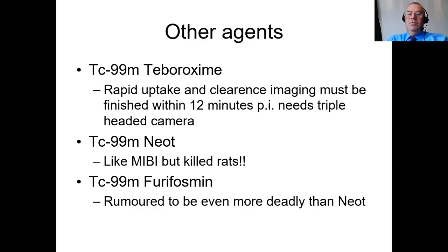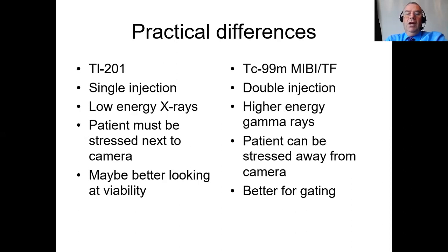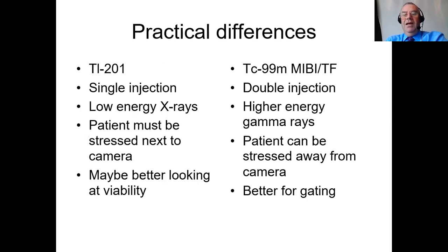Tetrofosmin has a very similar radiation dose and preparation doesn't require boiling, which used to help radiopharmacies. Other agents have been suggested but none have really been used - some were quite toxic, and terbosoxime washed out so fast that you needed a triple-headed gamma camera, which doesn't really exist today. In practical differences: thallium has a single injection with low energy X-rays but the patient must be stressed next to the camera and is probably better for viability. MIBI and tetrofosmin require two injections, higher energy gamma rays better for larger patients, the patient can be stressed away from the camera, and MIBI is much better for gating.